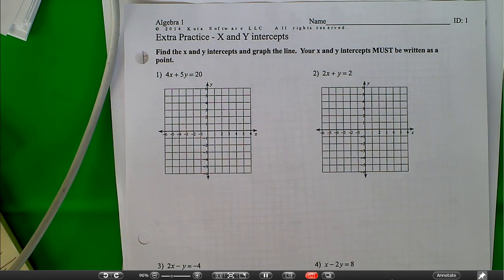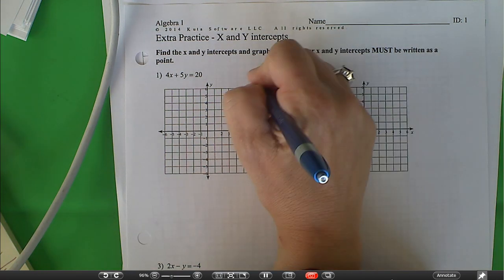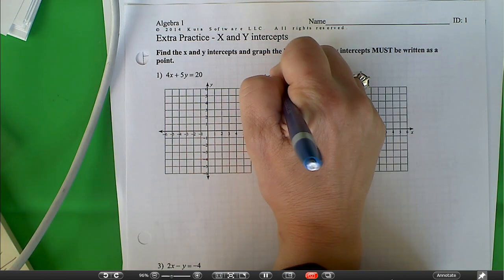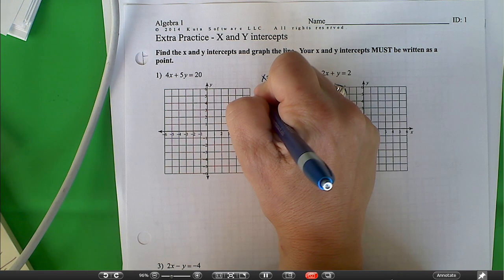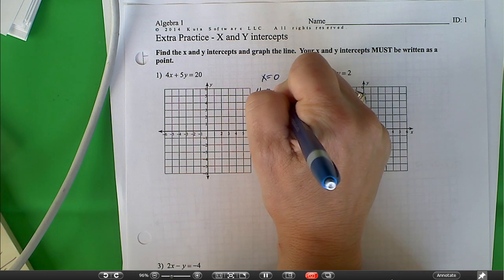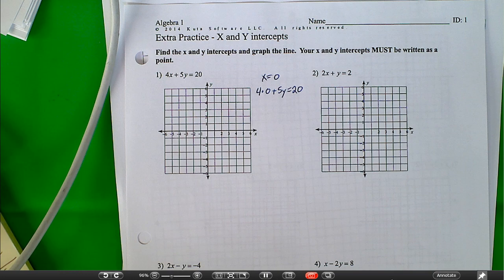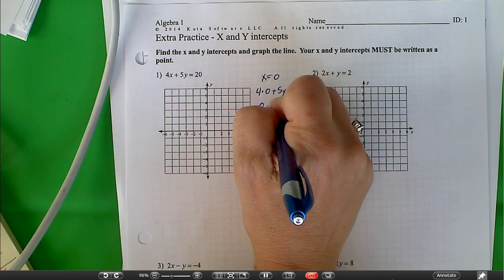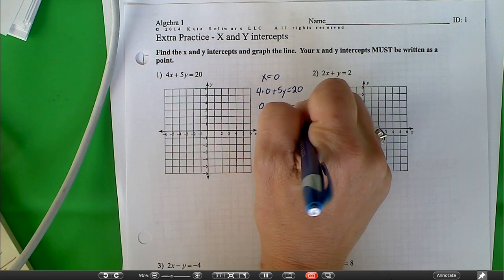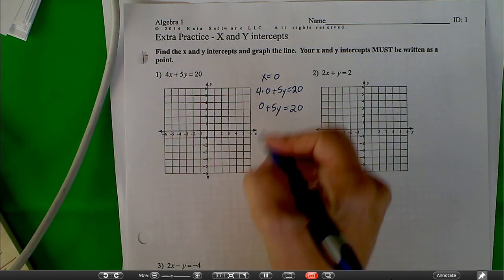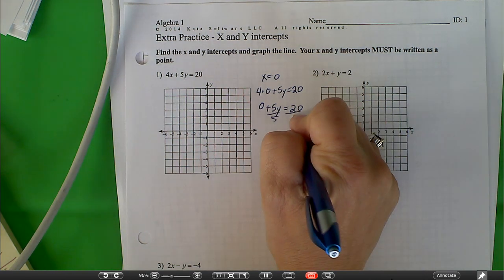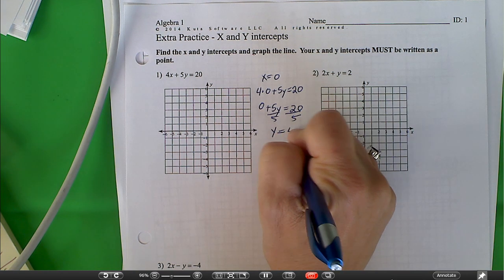We're going to be graphing with intercepts. In order to get the intercept, you want to do x is equal to 0. What is y? So I end up with 4 times 0 plus 5y is equal to 20. And now this becomes 0 plus 5y is equal to 20. Now we want to divide both sides by 5, and I get y is equal to 4.